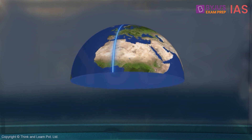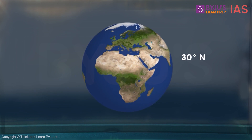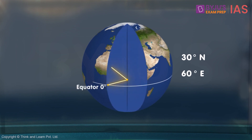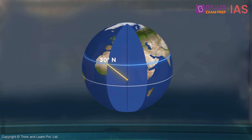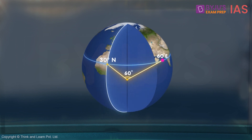If I tell you to find the coordinates 30 degrees north and 60 degrees east, what will that look like? This will be 30 degrees in the north — the entire circle is in fact 30 degrees north. So where on this circle is our point? Simply 60 degrees east of the prime meridian. This is how we locate points with the help of their coordinates.